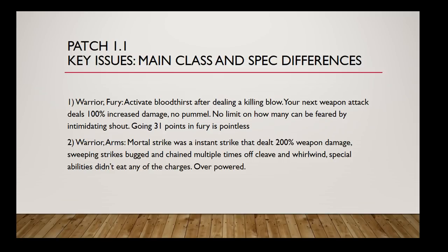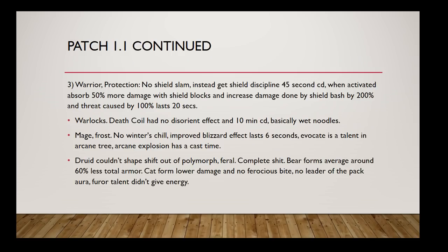In patch 1.1, Fury Warrior's Bloodthirst acted more like Ruthlessness on a rogue, where you could only use it after a killing blow, and weapon damage was 100%. There wasn't really a point to going full Fury — most warriors went Arms because Mortal Strike was an instant ability. Weapons weren't normalized back then, meaning attack power scaled with weapon speed, so slower weapons hit even harder. A warrior could literally run up to you, Mortal Strike you, one shot.